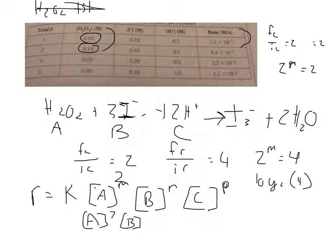Now in the last part, the hydrogen ion, whenever it doubles from 0.5 to 1.0, everything else remains the initial concentration, and the reaction rate stays the same. So your final concentration over your initial concentration equals 2, so 2 to the P equals 1. The only exponent that can get you a 1 from any number is 0. So this P is 0, and that drops C out of the rate equation.